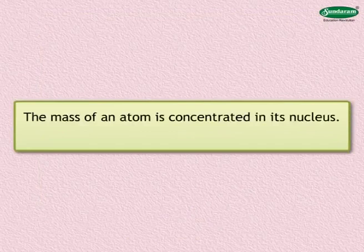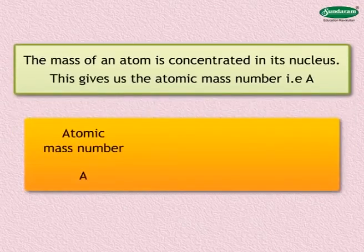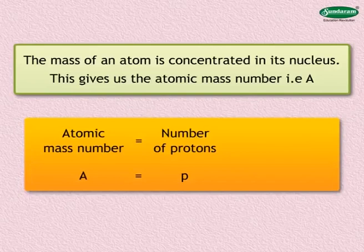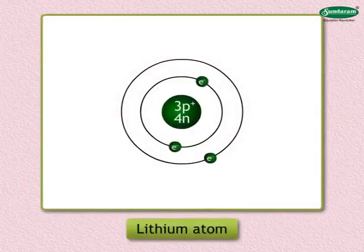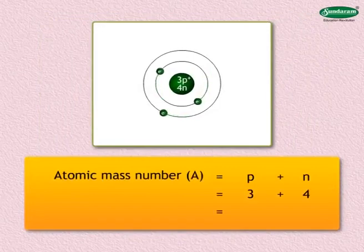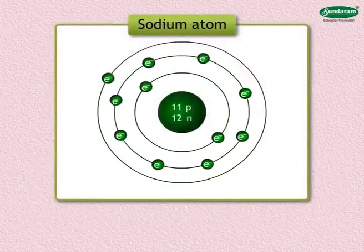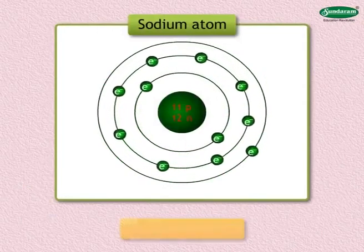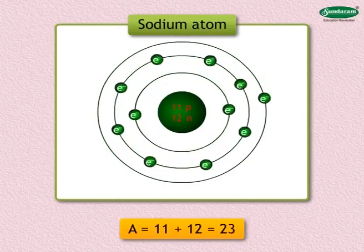The atomic mass number, represented by A, is the mass concentrated in the nucleus of an atom. The atomic mass number A equals the number of protons (P) plus the number of neutrons (N) in the nucleus. For example, a lithium atom contains three protons and four neutrons, so its atomic mass number A = 3 + 4 = 7. The atomic mass number of a sodium atom, which has 11 protons and 12 neutrons, is A = 11 + 12 = 23.